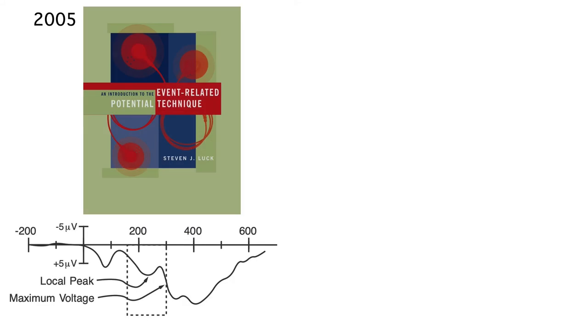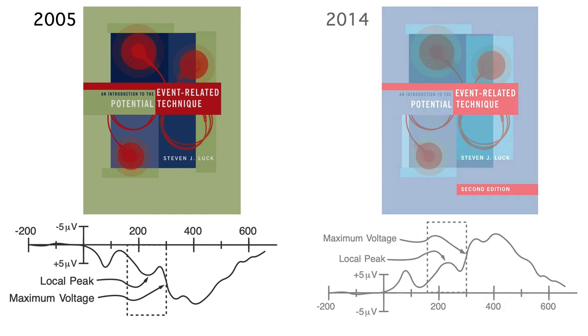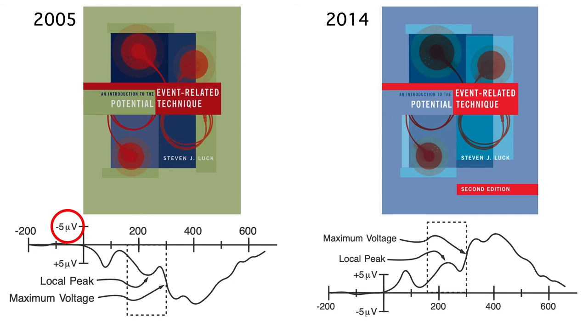Now I'd like to briefly discuss an oddity about how ERPs are sometimes plotted. Here's a figure from the first edition of my ERP book, and here's the same figure from the second edition. Do you see the difference? In the first edition, all the figures were plotted with negative upward. That's how I was trained to do it back in the 1980s.